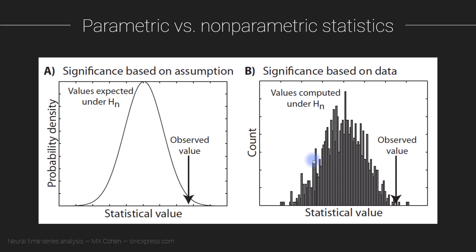The permutation-based approach is referred to as non-parametric because we don't have specific parameters evaluated based on a formula. Instead, we generate these distributions empirically from the actual data, simulating situations that could arise under the null hypothesis. I'll talk much more about generating this kind of empirical null hypothesis distribution in the next video. For now, I want to talk about some of the assumptions.